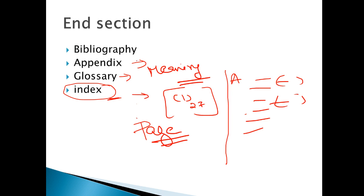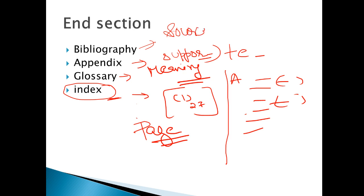Glossary means word meanings — you give the meaning of words. Appendix — here, the full findings tables are included, and you can also add supporting documents, noting whose help you took. You can write supporting documents there, and technical information can also be placed in the appendix. In bibliography, you properly write the complete list of all sources of data — source of data. If a question comes in the paper about what is in the end section, or what is in the main body, you should know these clearly.